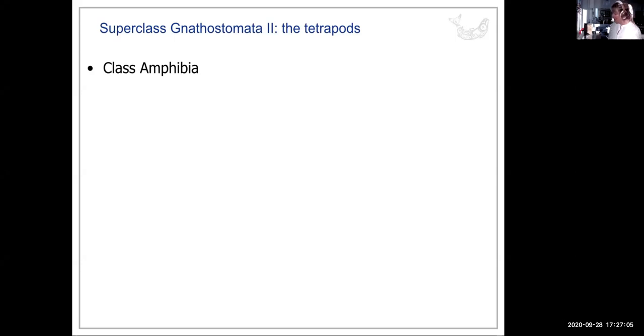So they lack some of the features that our gnathostomata have. In particular, they lack the four limbs of the tetrapods. So the first tetrapods are the amphibia.